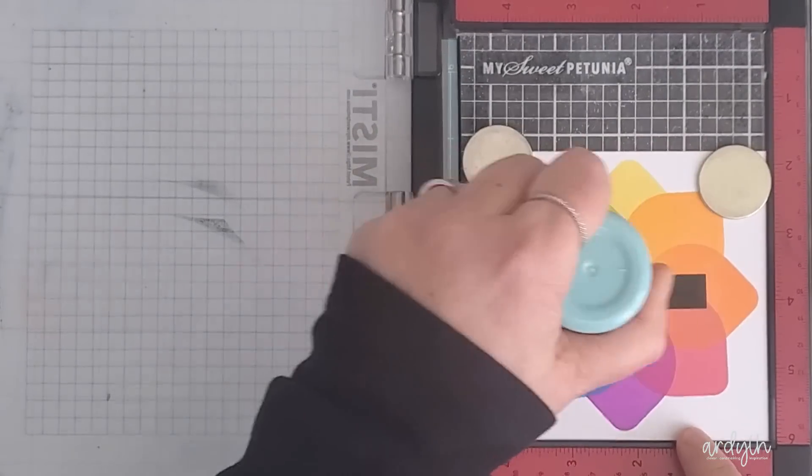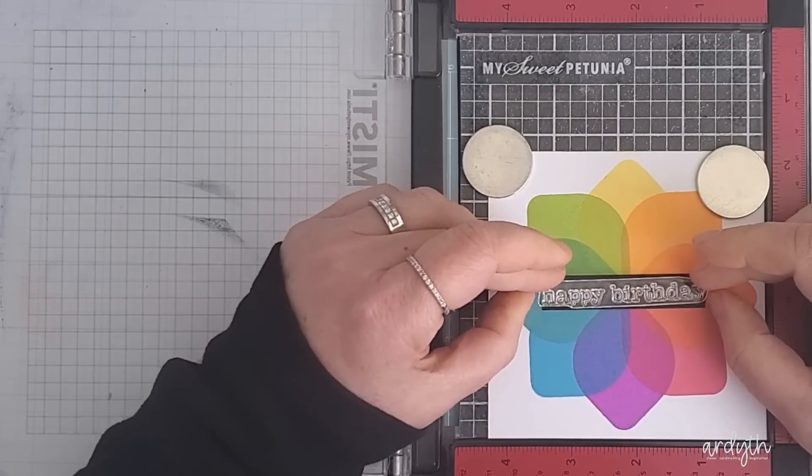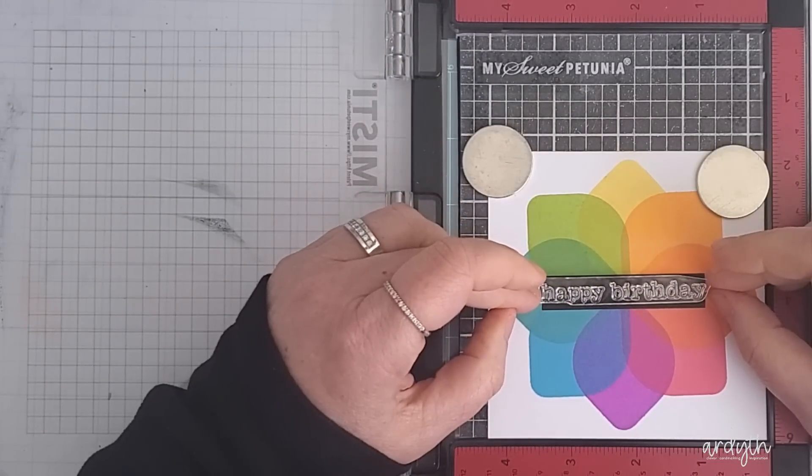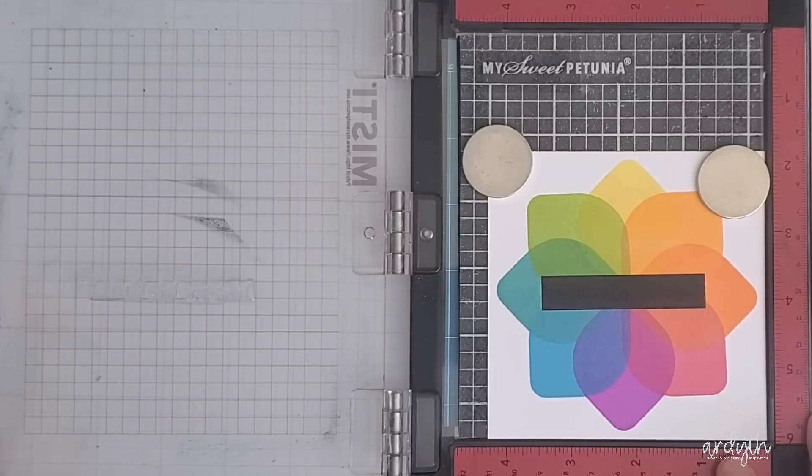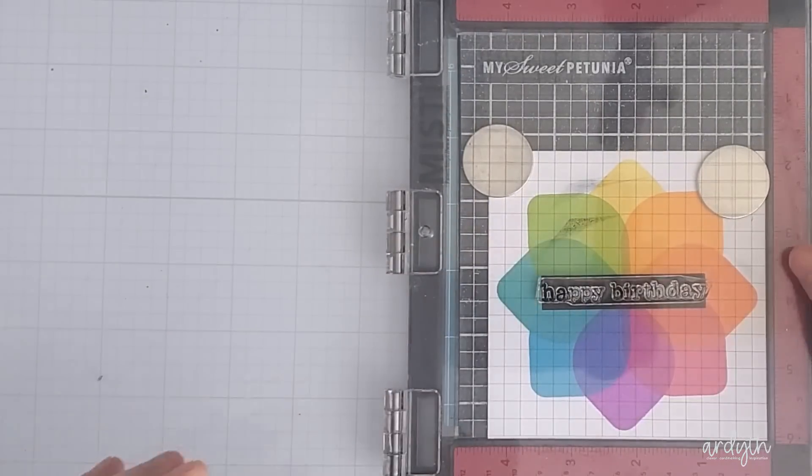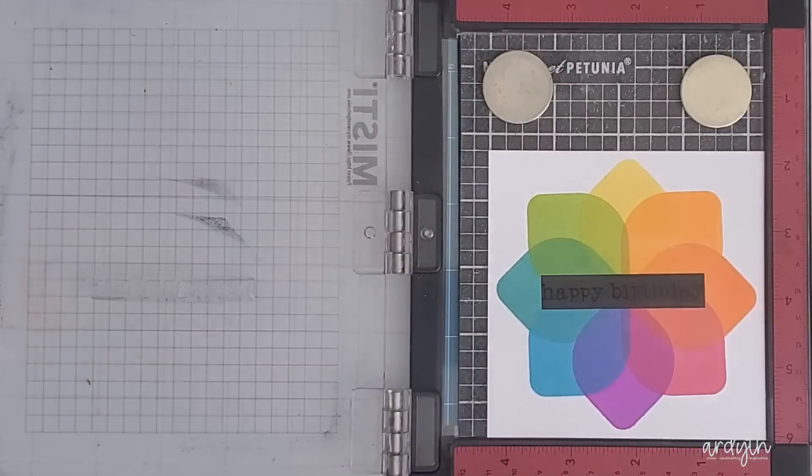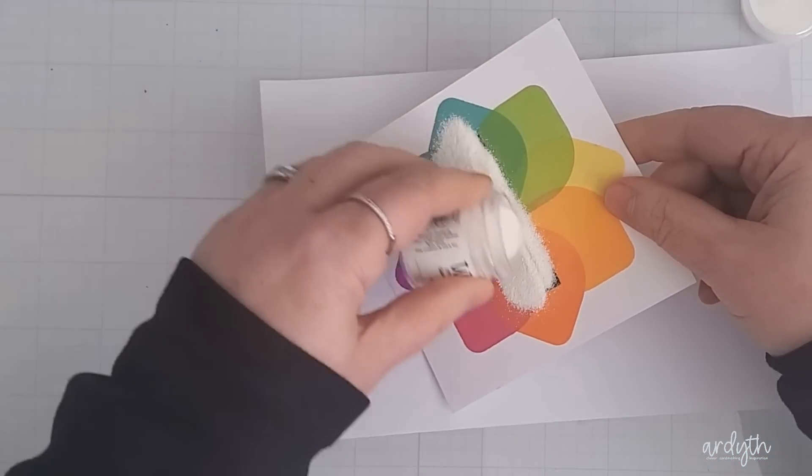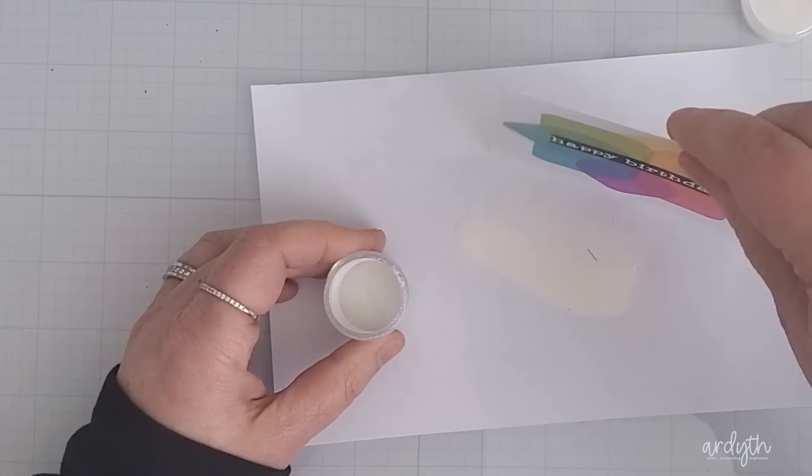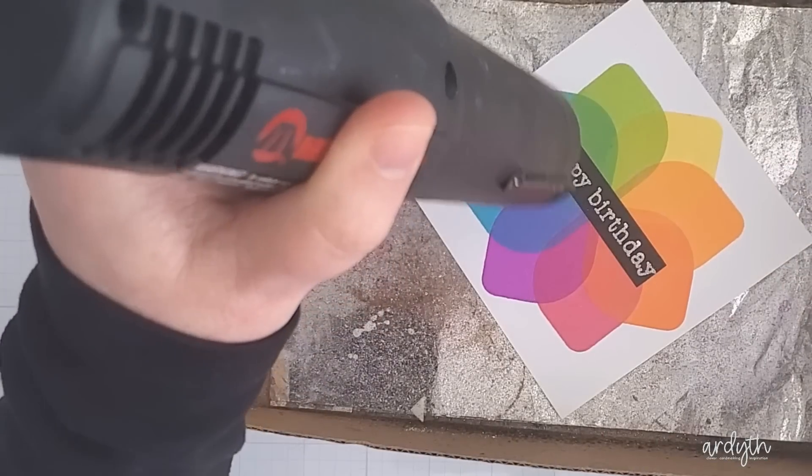Once the panel was completely dry I grabbed a sentiment from Catherine Pooler's Happy Birthday Many Ways set and that fits right into the sentiment strip area. I lined it up on the panel in my Misti and I stamped it a couple of times with WOW embossing ink. This is a sticky clear ink that's used in heat embossing. All you do is pour your embossing powder over top and it sticks only where the ink is.